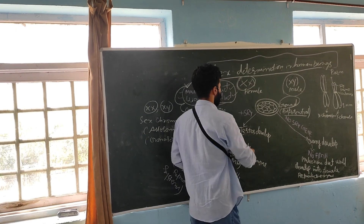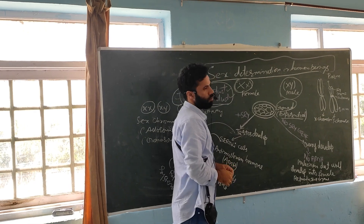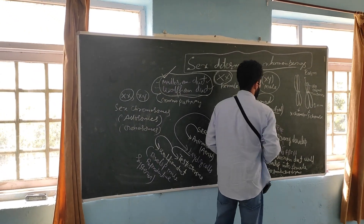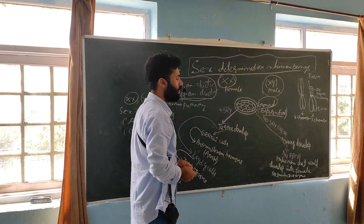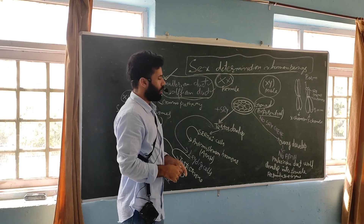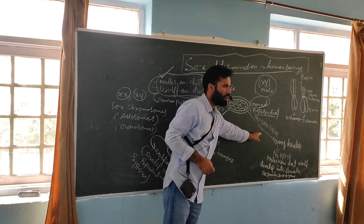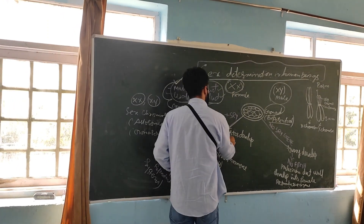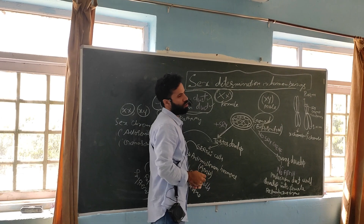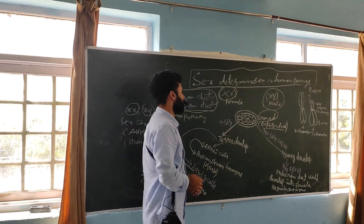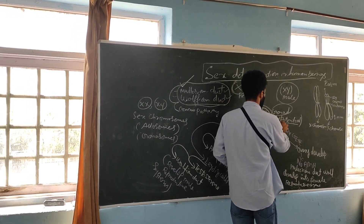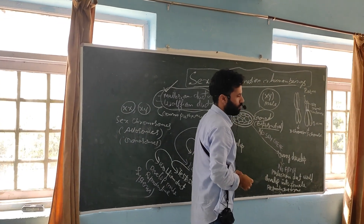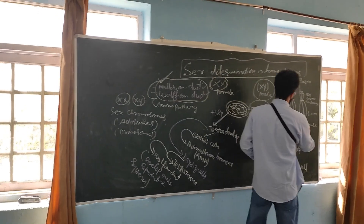There are two pathways: either male or female. If there is testicular development, the baby will develop into male. If there is ovarian development, the baby will develop into female. The most important role is played by the Y chromosome. I have drawn the Y chromosome here.